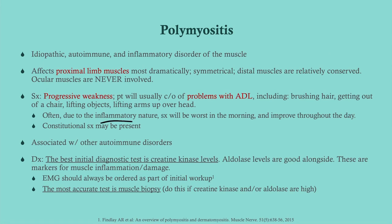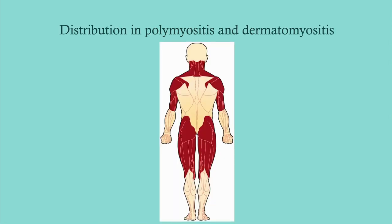The best initial diagnostic test is creatine kinase levels; aldolase is also good to get alongside it — these are markers for muscle inflammation and damage. An EMG should also be ordered as part of your initial workup when you're thinking skeletal muscle involvement. The most accurate test is muscle biopsy.